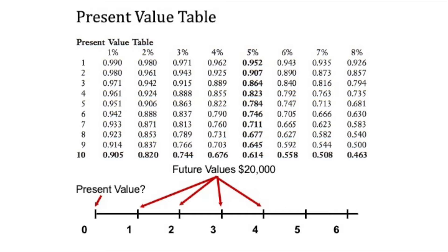How do we make that decision — what's better given different types of cash flows over different periods of time? This could be easily translated into a business context. So first we calculate our present values. We're going to take the present value of the $20,000 payments. We already know the present value of the $70,000 — it's $70,000 because we get that today. We're just trying to figure out what's the present value of those four future payments of $20,000 each.